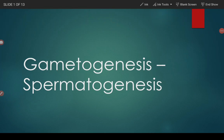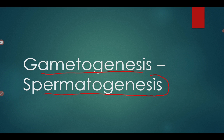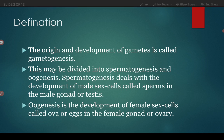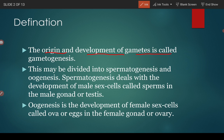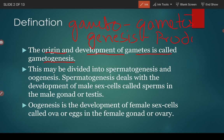This is another video on developmental biology, and in this video we are going to talk about gametogenesis. The origin and development of gametes is called gametogenesis. As the name suggests, 'gameto' means gametes and 'genesis' means production. So gametogenesis is the process in which the origin and development of gametes occur.